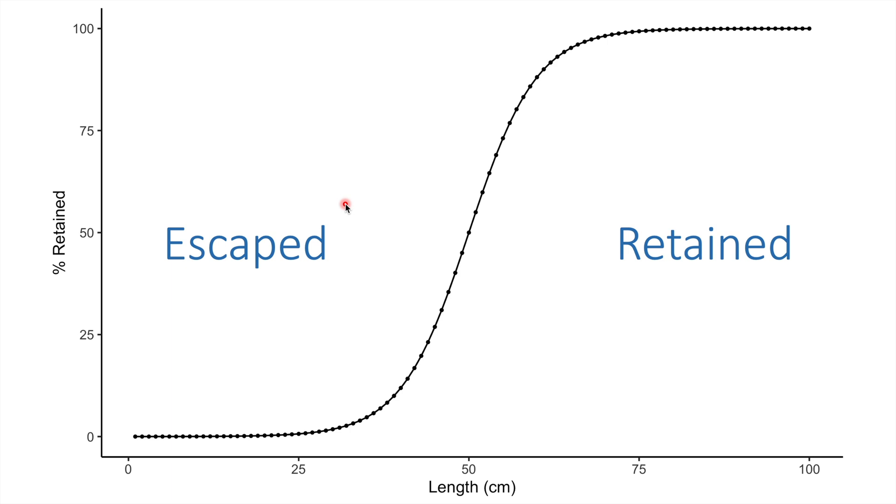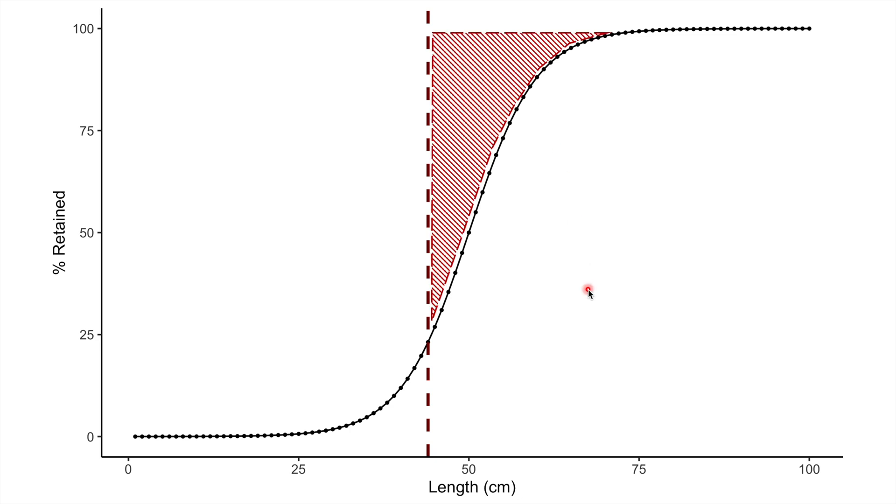Using the example of the Barents Sea cod fishery, which has a minimum legal catch size of 44 cm, we know that all of the fish between the minimum legal catch size and the selection curve can be targeted sustainably by the fishery. However, for whatever reason, they have not been caught, leading to wasted income and wasted protein.